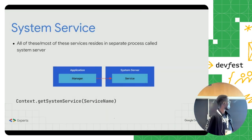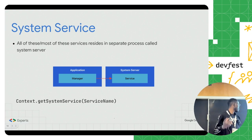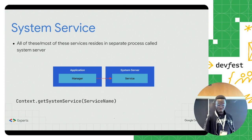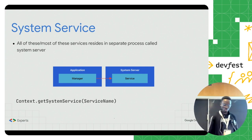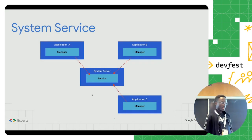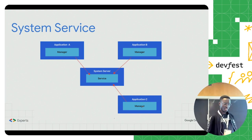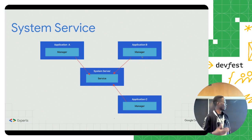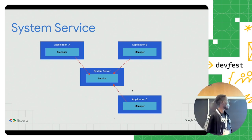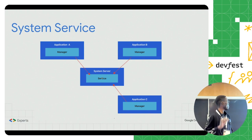We access those managers using this instruction from a particular context: context.getSystemService(), and you just provide the name of the service you want access to. We have an architecture with multiple applications running, each having a manager to access a particular service. You can have an alarm manager, a notification manager, and even two applications trying to access the same service. There is only one service instance, but it can be accessed by different managers.